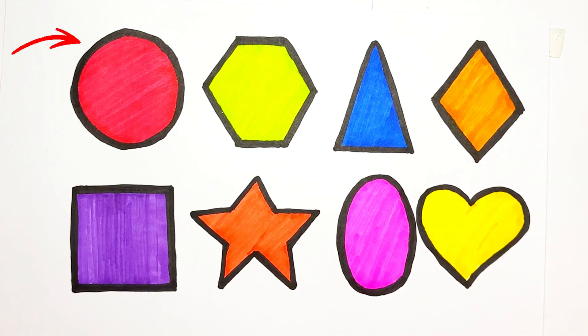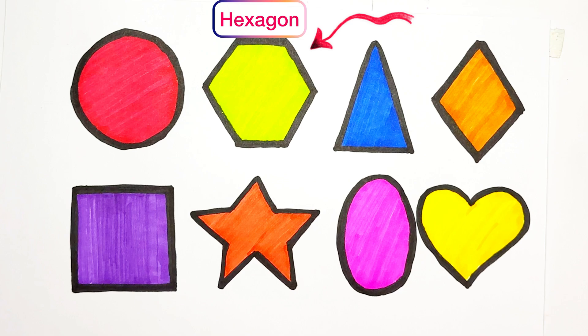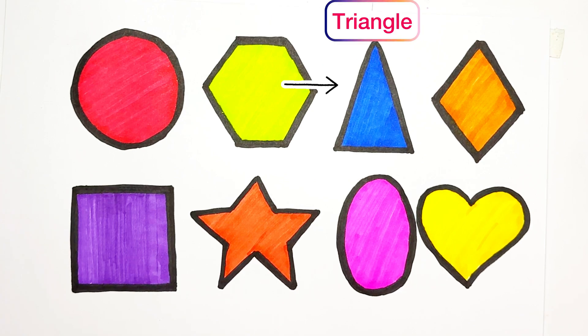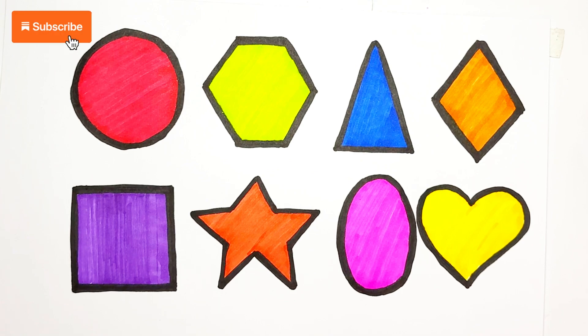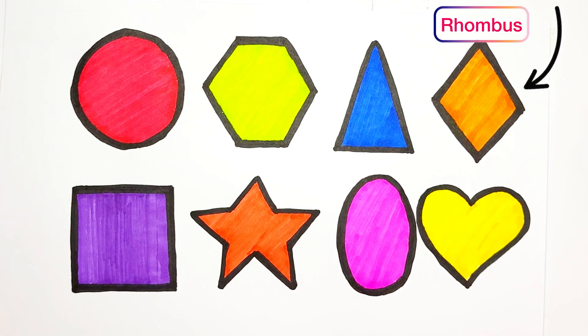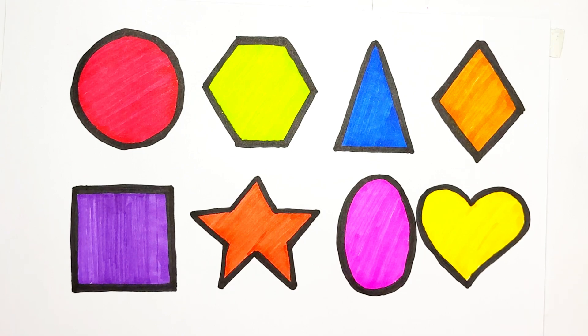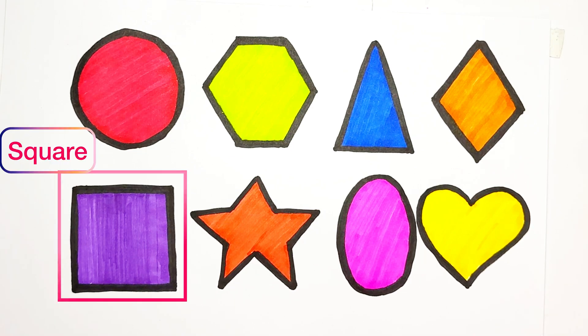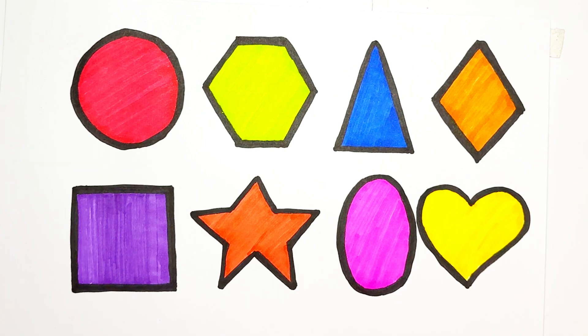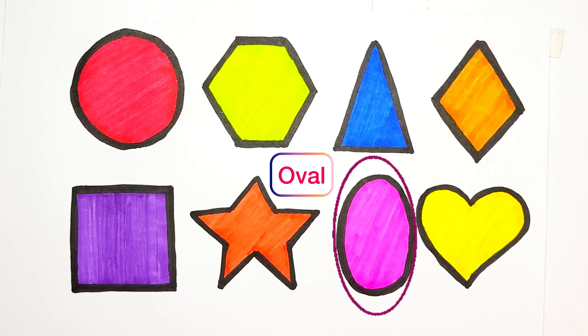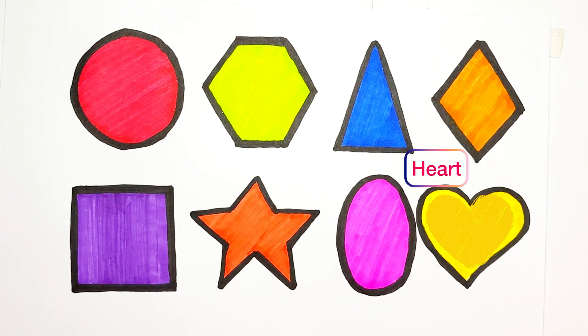So let's repeat once again: red circle, green hexagon it has six angles, blue triangle it has three angles, light orange rhombus it has four angles, purple square has four angles, orange five-pointed star has five rays, pink oval, and yellow heart. Bye!